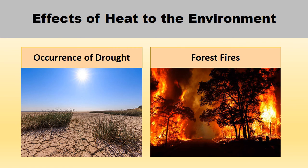Heat also affects the environment. The first effect is the occurrence of drought. During drought season, there is plenty of sunlight; tanks and rivers dry up, the water level goes down, and the land dries out severely. The environment becomes dusty, which can cause forest fires to spread.